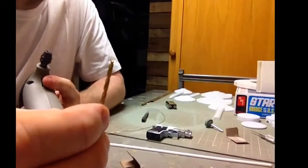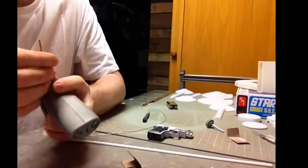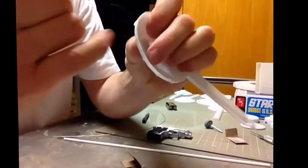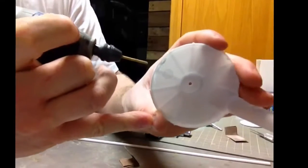I use this 3/32nds bit to drill the hole in here where I'm gonna have the light come out.